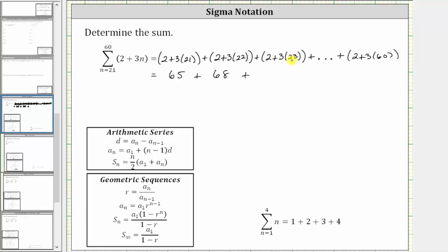Next we have three times 23 which is 69. Two plus 69 is 71 plus. And then the last term we have three times 60 which is 180. Two plus 180 is 182.